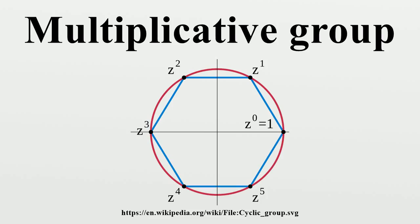The resulting group scheme is written mu n. It gives rise to a reduced scheme, when we take it over a field K, if and only if the characteristic of K does not divide n.